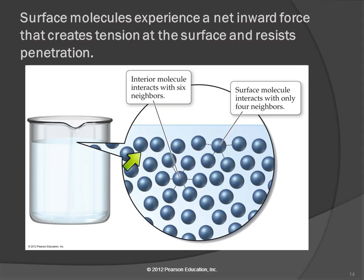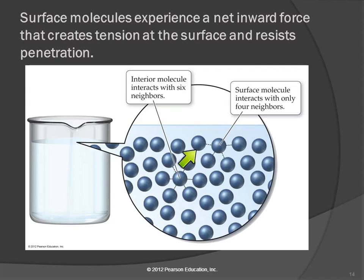Water molecules get to play Red Rover. The stronger the intermolecular forces, the more tightly the children hold onto each other, and it's harder for things to get through. Water is more like linebackers on the football team playing Red Rover — it's hard to get through, so you can float a paper clip on top. Gasoline might be more like kindergarteners: they're holding hands but not very firmly, and the paper clip just sinks right through.